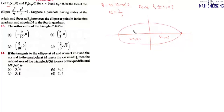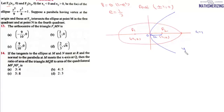For F1, x is negative, so F1 = (-1, 0) and F2 = (1, 0). A parabola having vertex at the origin and focus at F2 intersects this ellipse at point M in the first quadrant and N in the fourth quadrant. We draw a parabola with vertex at the origin and a = 1, so its equation is y² = 4x.